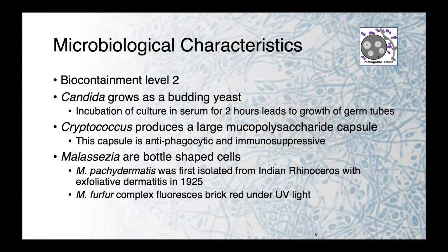All of these organisms are biocontainment level 2. In the lab, Candida grows as a budding yeast, and if we incubate that pure culture in serum for two hours, what we get are the growth of germ tubes — these long structures emanating out from the yeast. Cryptococcus species produce a very characteristic large mucopolysaccharide capsule, which is antiphagocytic and immunosuppressive and makes them easy to identify, while Malassezia are bottle-shaped cells.